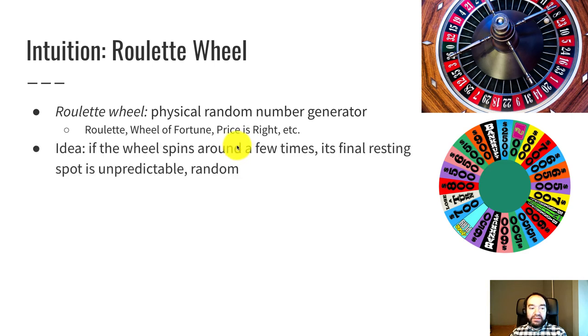So kind of the idea is that if the wheel spins around multiple times, its final resting spot is unpredictable. And that works as a random outcome. You could kind of cheat and just tap this and make it move one click over. But that's not allowed.